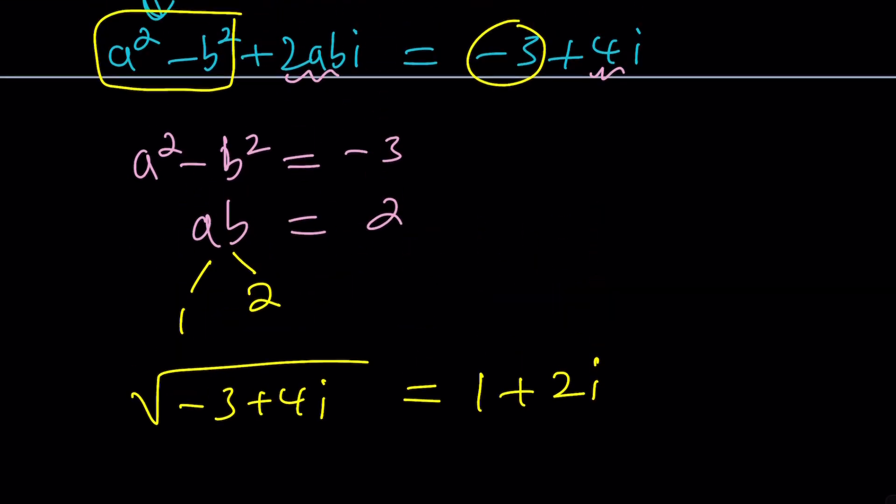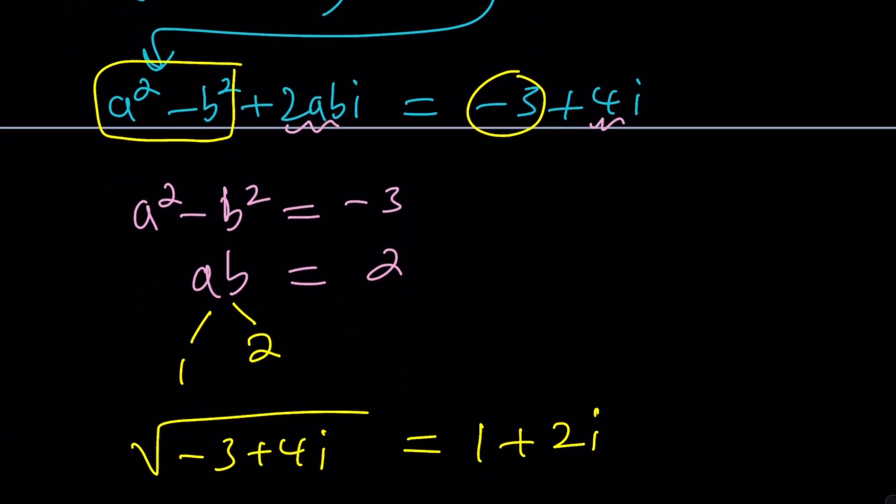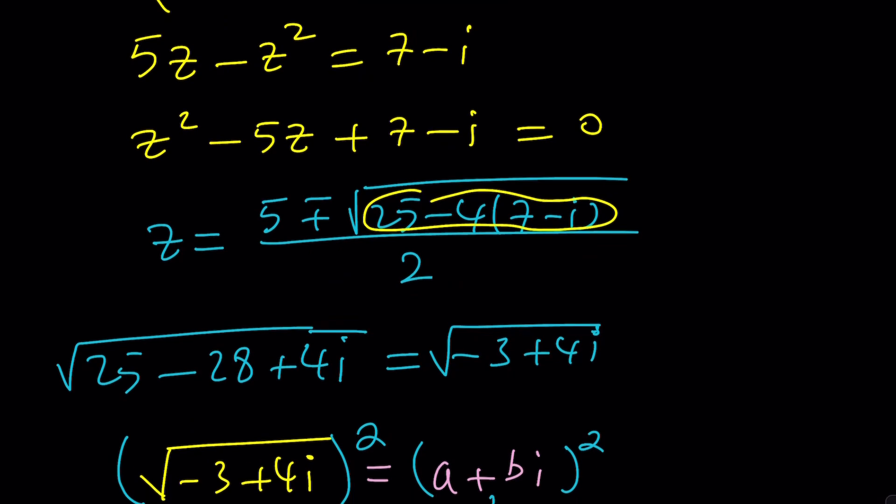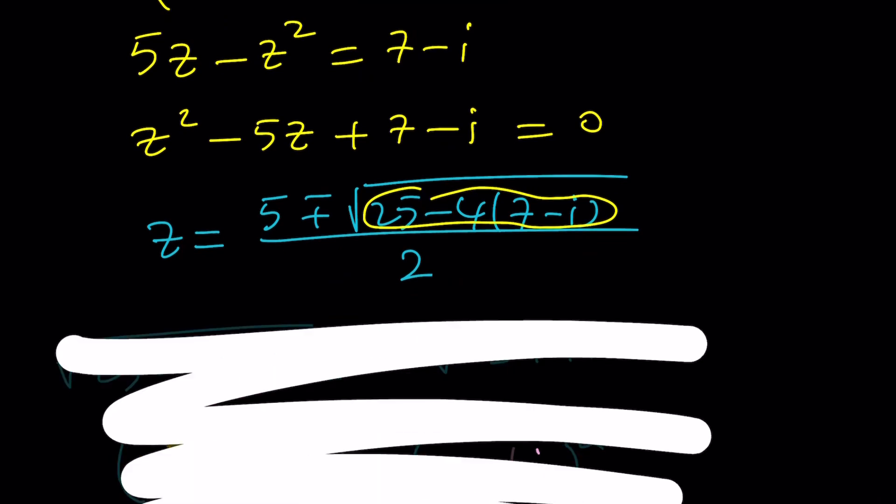Now, let's go ahead and plug this in. What did our expression say? Z equals something, something. And from here, we get negative 3 plus 4I. And we found that the square root of that number to be 1 plus 2I. Let's go ahead and erase this area and replace the radical with 1 plus 2I.